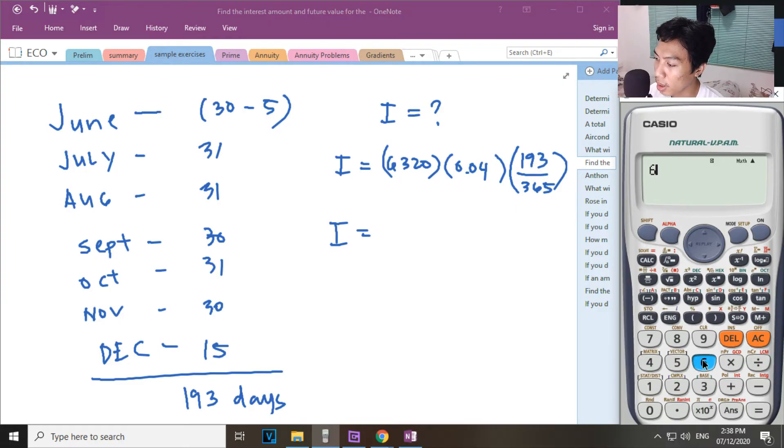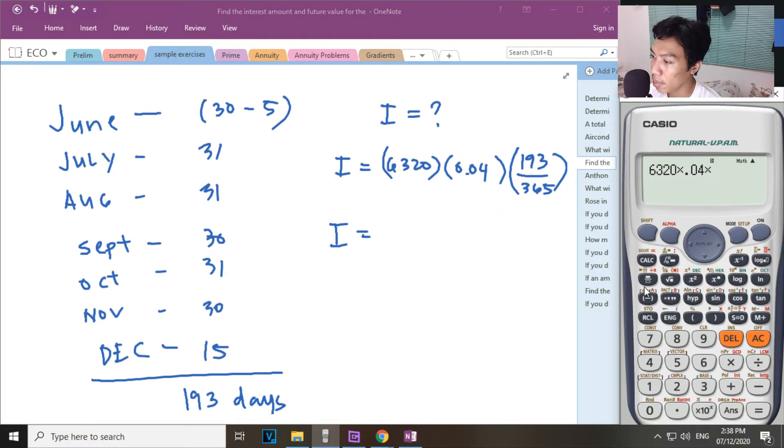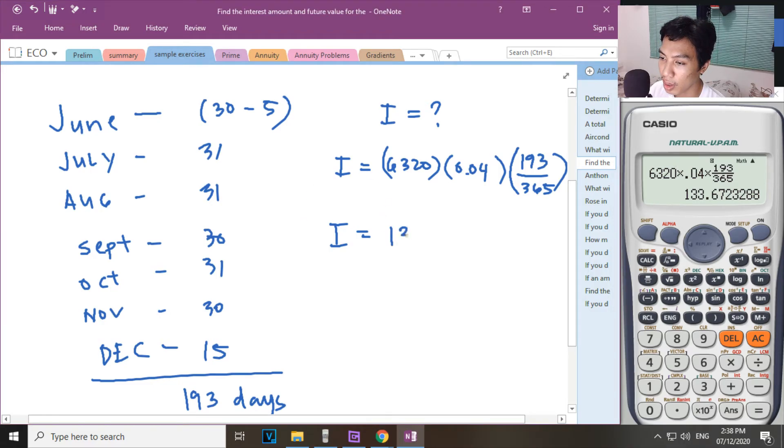So I, ang principal mo is 6,320. Tapos yung interest is 0.04, kasi 4%. And then 193. Hindi naman leap year yan. So 365. So I will be 6,320 times 0.04 times 193 divided by 365. So 133.67. Yan ang tinubo niya. 133.67 pesos. In 193 days. Yan ang tubo niya.